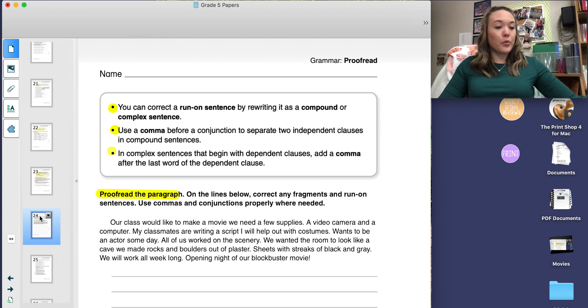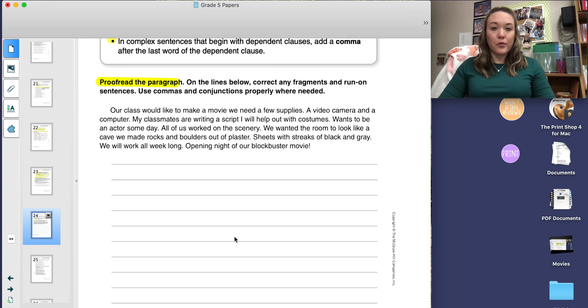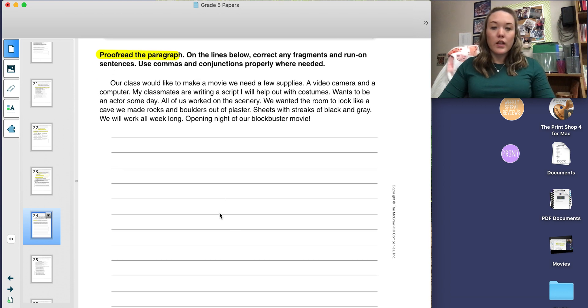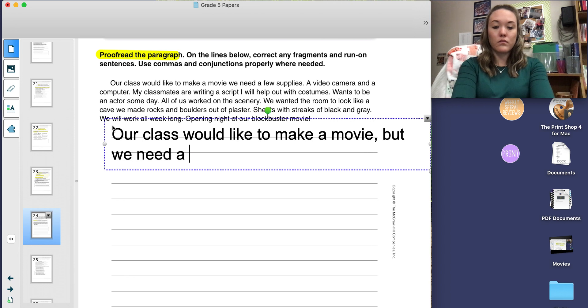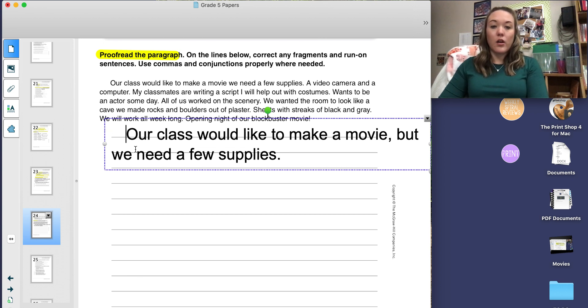Your last page is your proofreading page. The box at the top reminds you of all the rules from the previous pages. The directions say to proofread the paragraph. On the lines below, correct any fragments and run-on sentences. Use commas and conjunctions properly where needed. Let's take a look at the first sentence and then you'll finish it on your own. Our class would like to make a movie, we need a few supplies. That is a run-on sentence. I am going to add a comma and a conjunction to make it a compound sentence. Our class would like to make a movie, comma, but we need a few supplies. I corrected that run-on by making it compound.